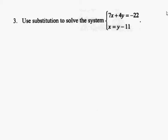Problem number three, we're going to use substitution to solve the system. 7x plus 4y equals negative 22, and x equals y minus 11.